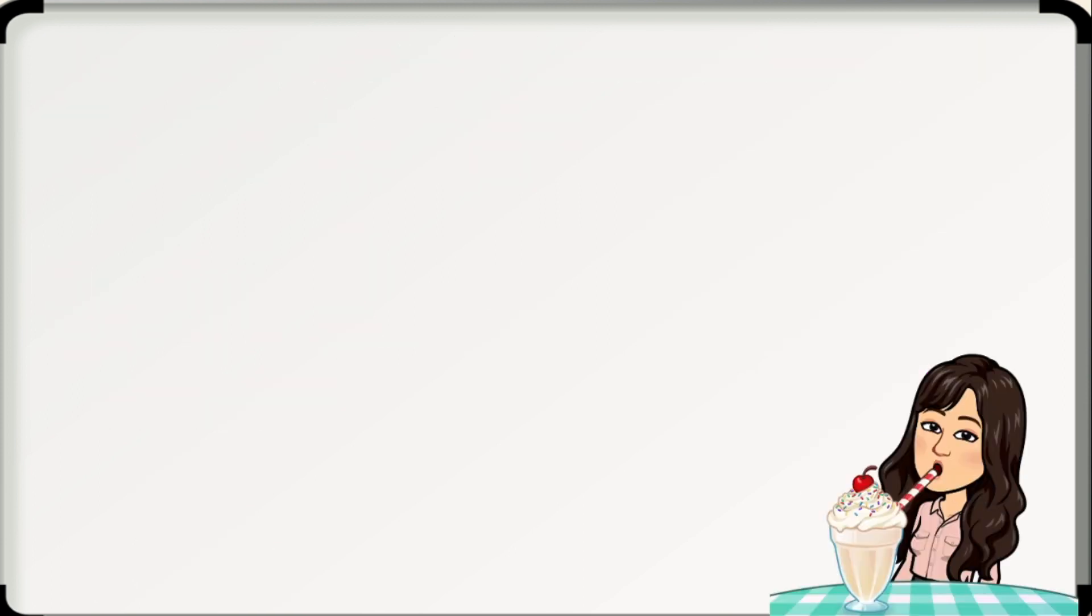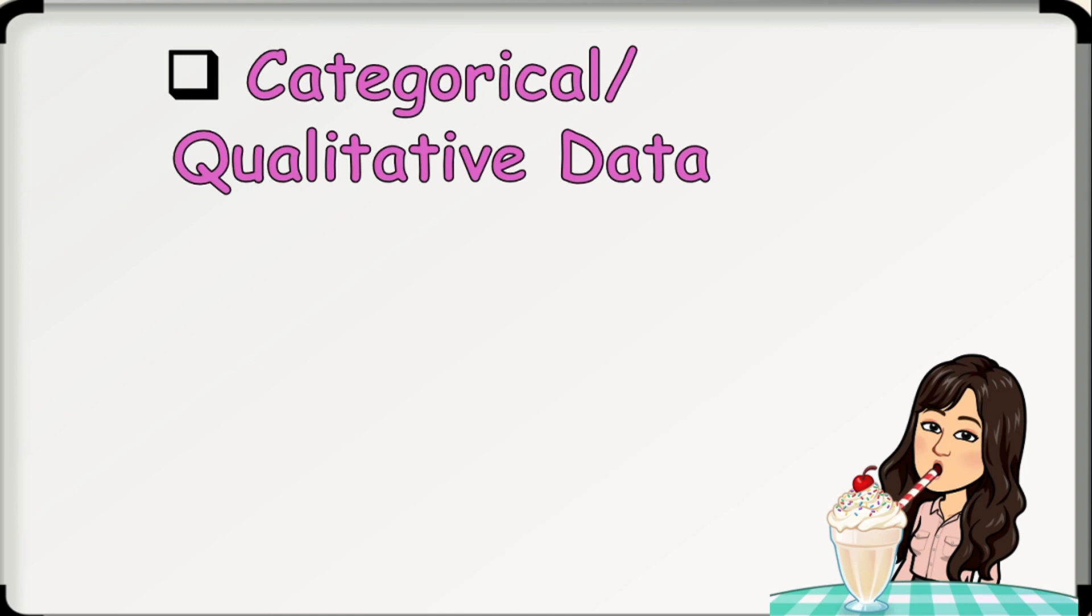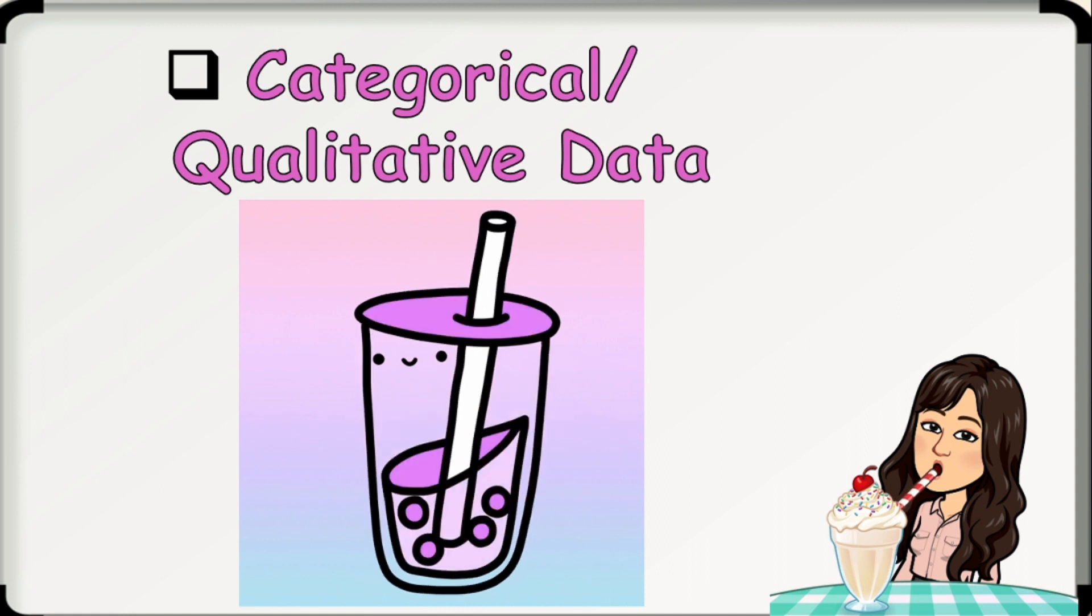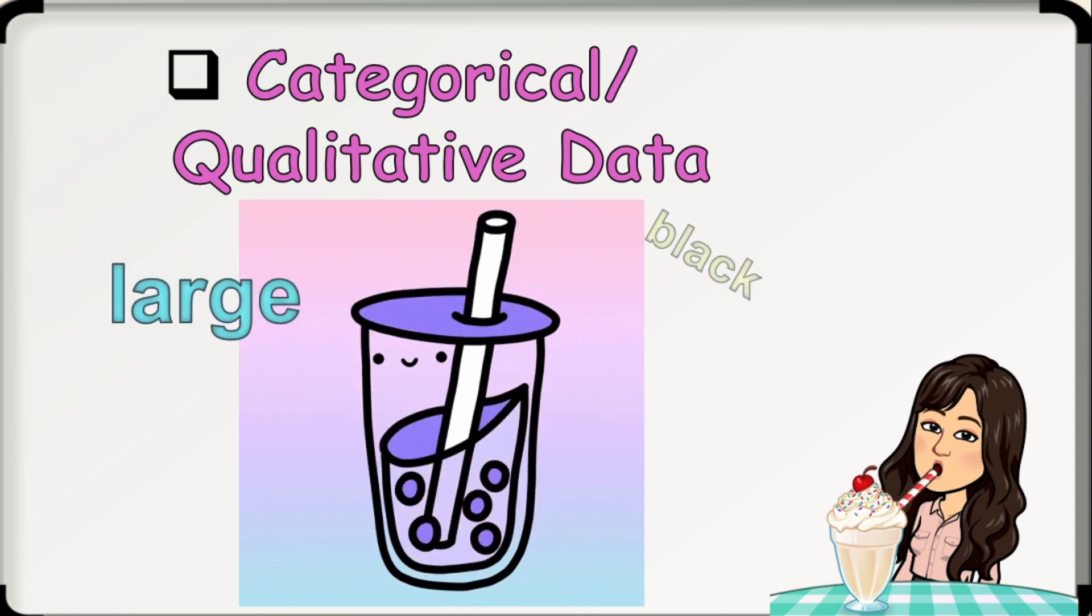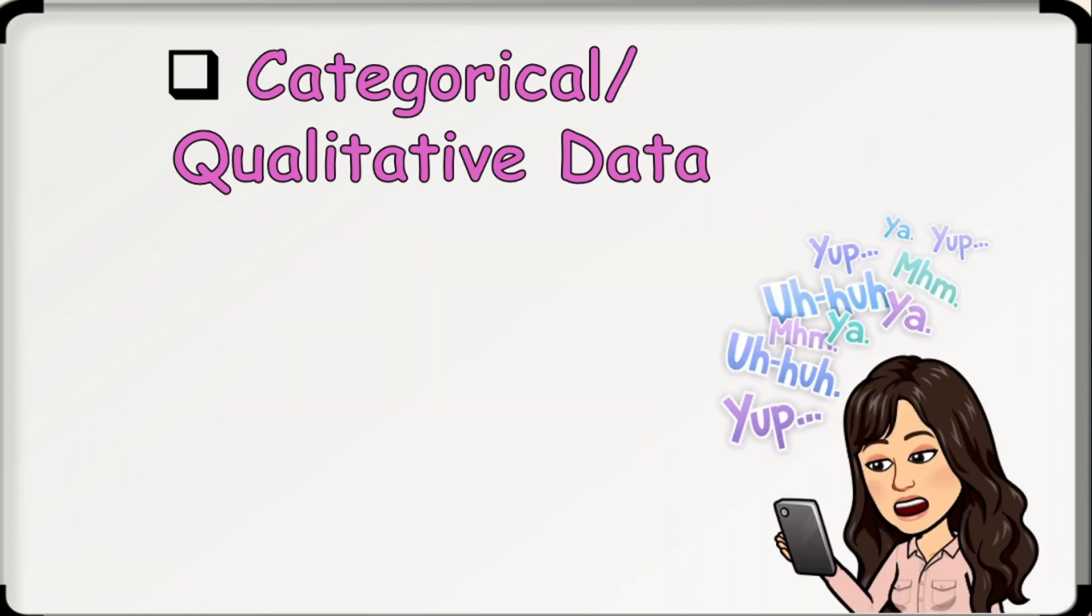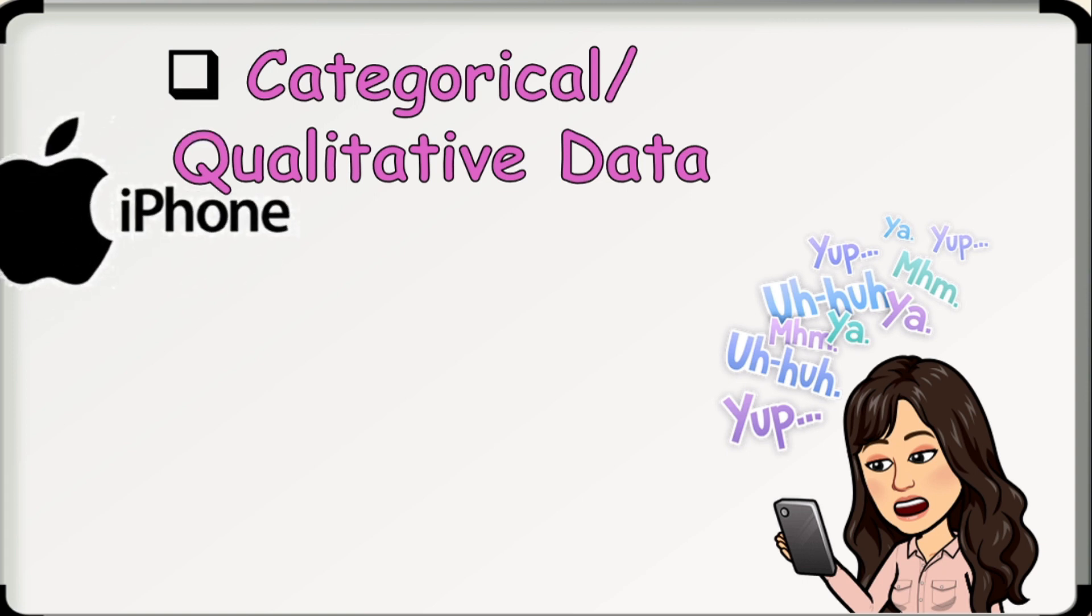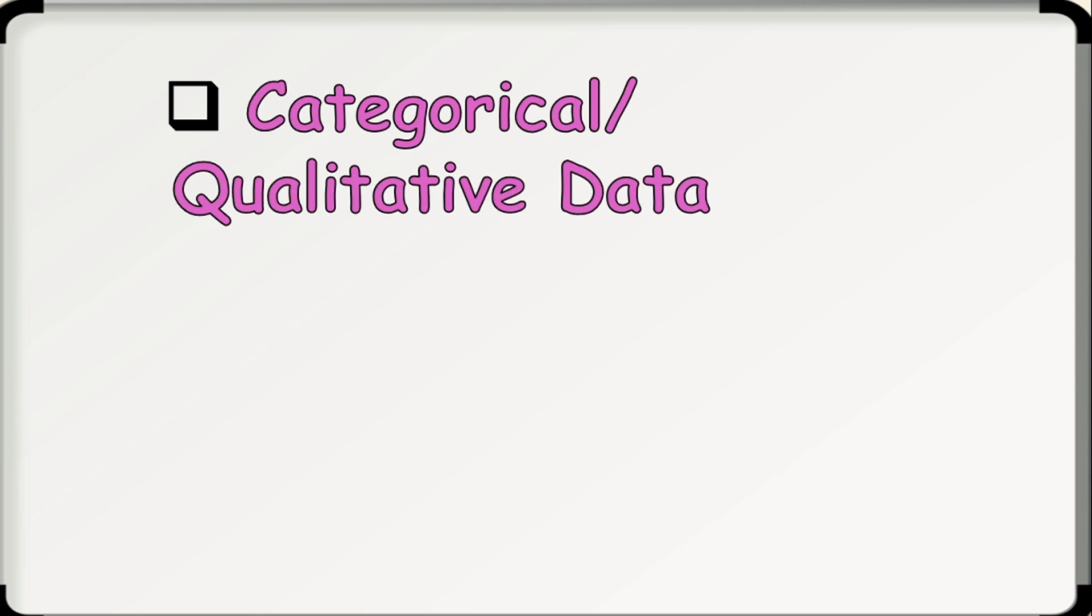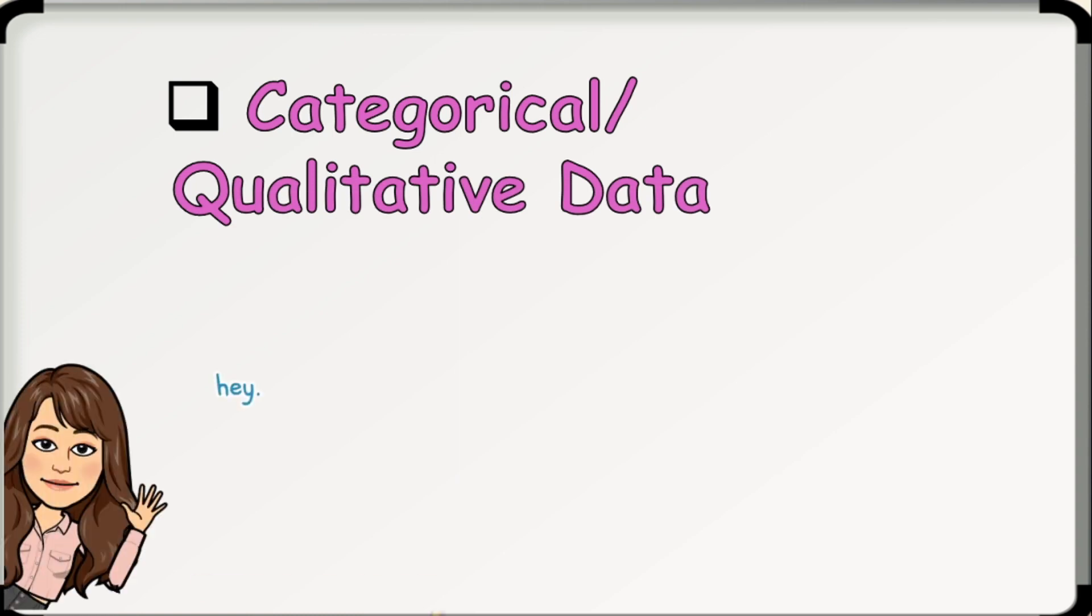Now, let's proceed to the second type of data, which is the categorical or qualitative data, where the data set is non-numerical values. For example, if we are to describe this milk tea qualitatively, then we may say that it is large in size, it has black pearls, and it is chocolate-flavored. Qualitative data can be used to classify or categorize something. For example, if we want to classify the brands of cell phones of some students in a class, then we may have iPhone, Samsung, Huawei, Oppo, etc. Another example of qualitative data is hair color. In this example, we may classify hair colors as brown, black, blonde,